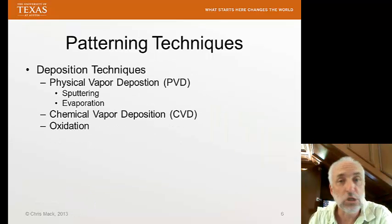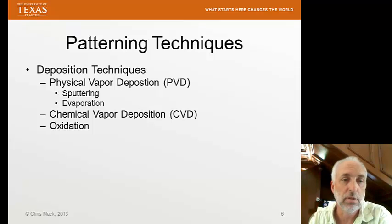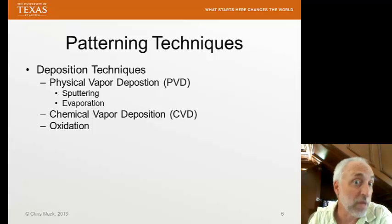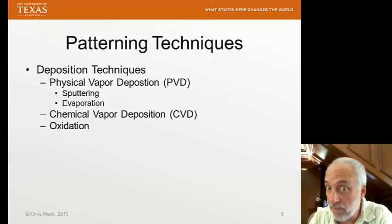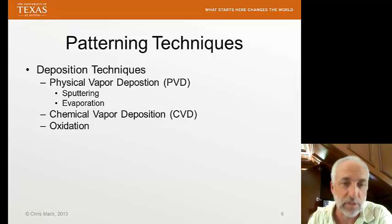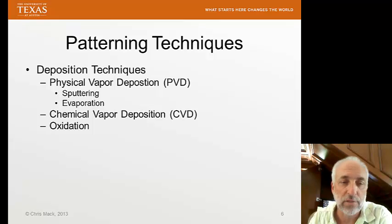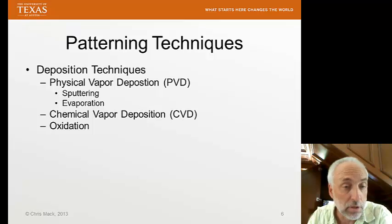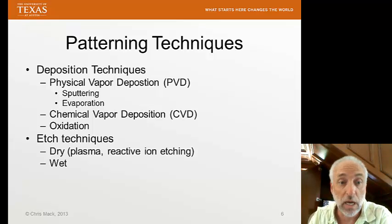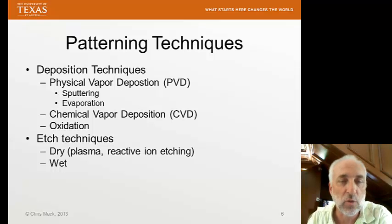Besides lithography, there are different deposition techniques we need to understand. Later in the semester, we'll talk about physical vapor deposition — things like sputtering and evaporation. We'll talk about chemical vapor deposition, where chemistry occurs in the vapor phase and materials are deposited on the wafer, with reactions occurring on the surface of the silicon wafer. There are lots of different chemical vapor deposition techniques we'll cover. We can also oxidize silicon directly — grow silicon dioxide by supplying oxygen to a silicon wafer — and oxidation is a very important processing step. For etching, there are many techniques as well: dry etching, plasma etching, reactive ion etching, and basic wet chemical etching, such as using an acid to etch away a metal.